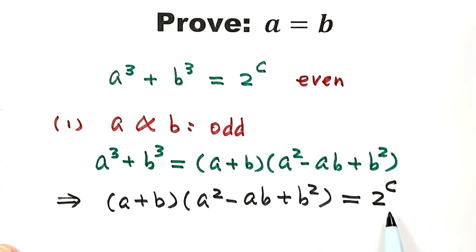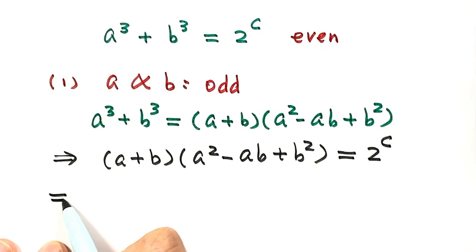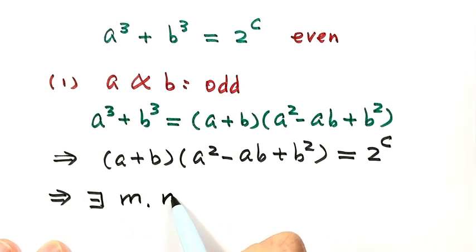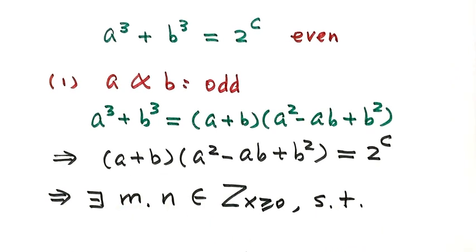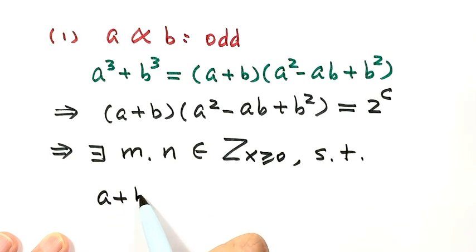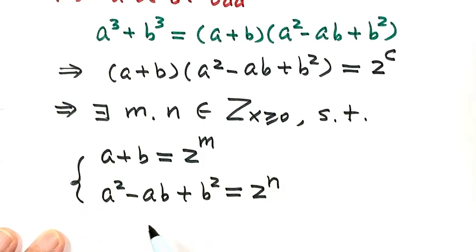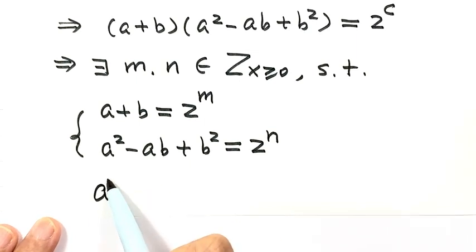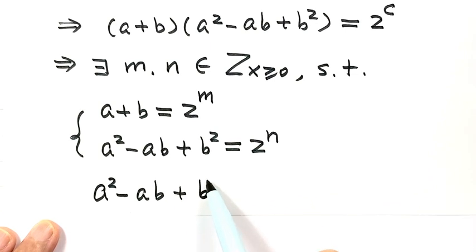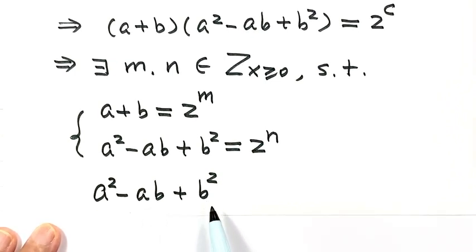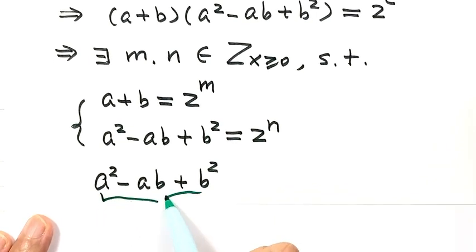Because the right hand side is 2 to the power of C, it has only one prime factor. So there exist non-negative integers M and N such that A + B equals 2 to the power of M and A² − AB + B² equals 2 to the power of N. Because A and B are both odd numbers, all three terms of A² − AB + B² are odd, so this expression is odd.